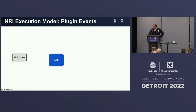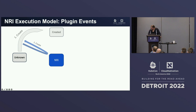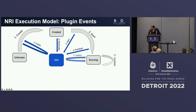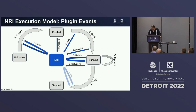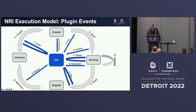For container lifecycle events, the situation is different because container configuration can be customized by plugins. The NRI-defined lifecycle events for containers are similar to the CRI ones but include additional post variants. The full event set is: create, post-create, start, post-start, update, post-update, stop (which is semantically a post-stop), and remove. Plugins can customize containers during creation, update, and stopping. These events are semantically requests, so plugins can respond to them with a set of customization changes.